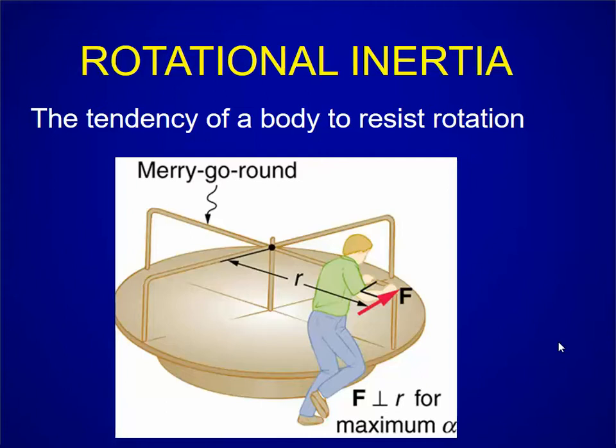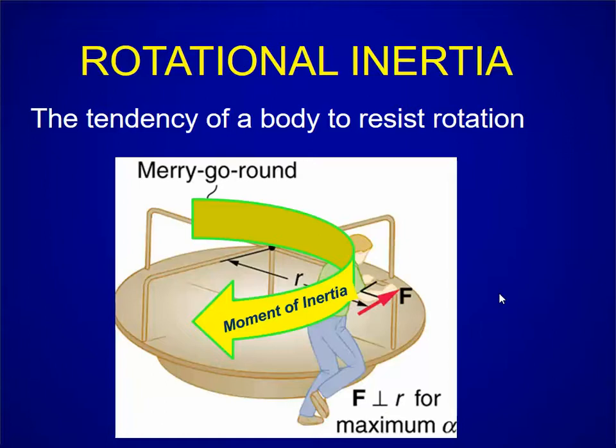And so this rotational inertia resists a body, or is a tendency of a body to resist rotation. So we're not in the linear world, we're not resisting linear motion, we are resisting rotational motion. And this rotational inertia is called the moment of inertia.